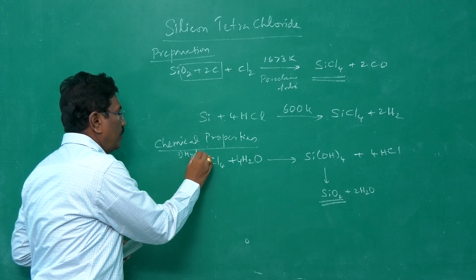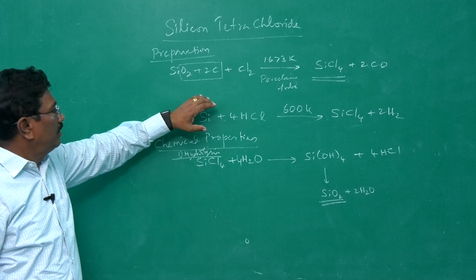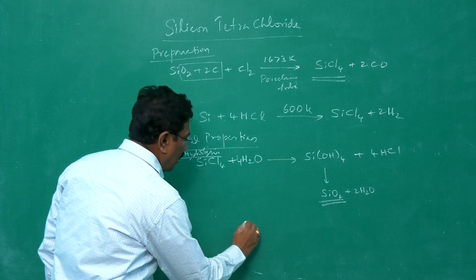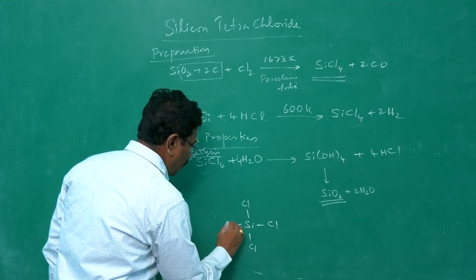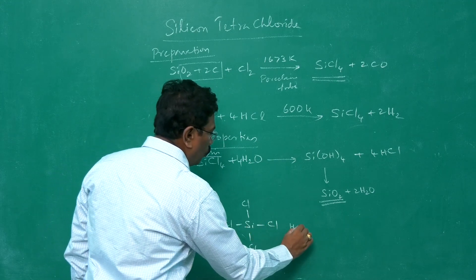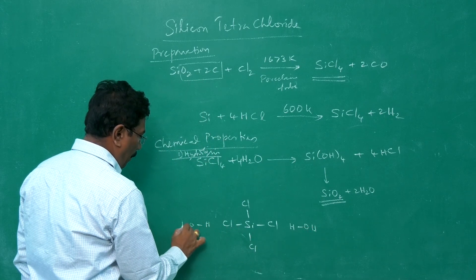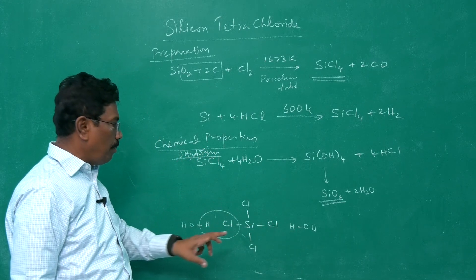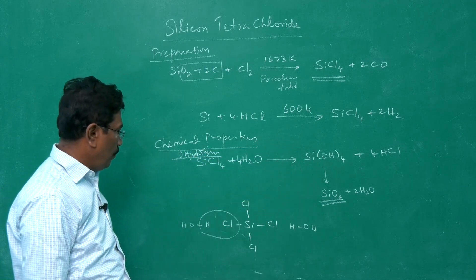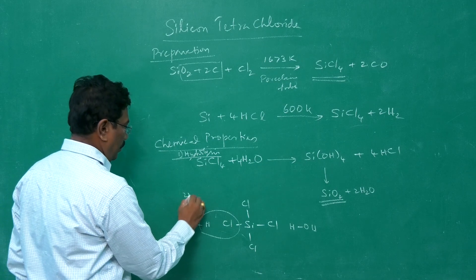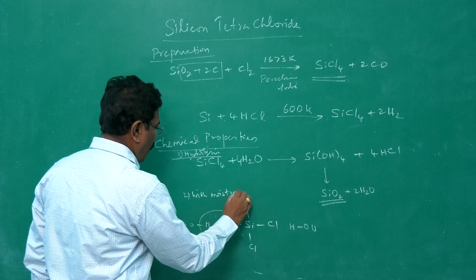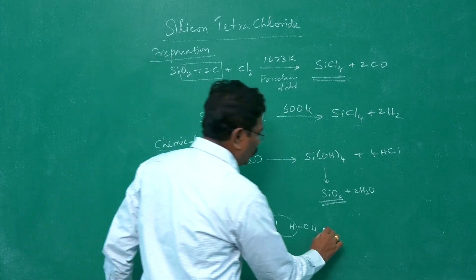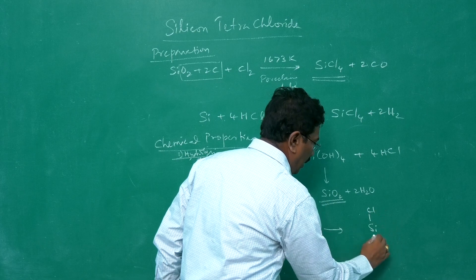In moisture, silicon tetrachloride fumes. What is happening? Two of the chlorine atoms may be hydrolyzed with two water molecules to become two OH groups at both ends. Here we have seen all four chlorine atoms replaced by four OH groups to form silicic acid and silica. If it is with moisture, what is happening?